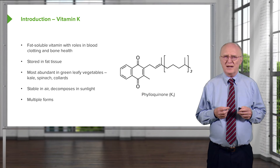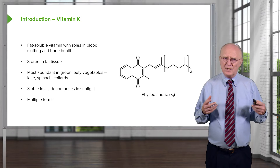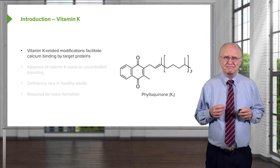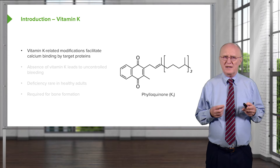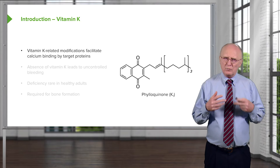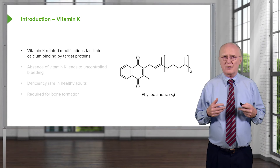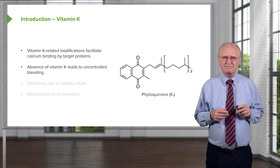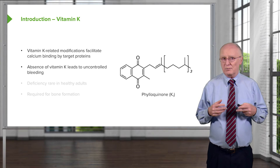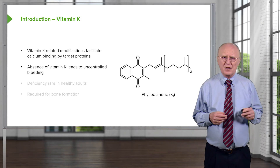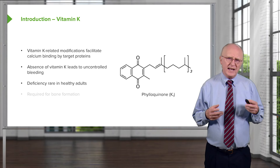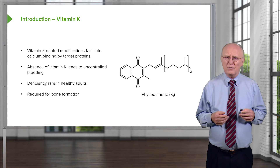There are several forms of vitamin K, including natural forms found in nature, and man-made forms that also appear to function in a similar fashion. Vitamin K-related modifications facilitate the binding of calcium to target proteins, and this is what vitamin K's function really is — in both the blood clotting process as well as in maintaining bone health. It's the absence of vitamin K that leads to uncontrolled bleeding, meaning that vitamin K is essential for the clotting process. A deficiency of vitamin K, however, is relatively rare in healthy adults, and it is required for bone formation.